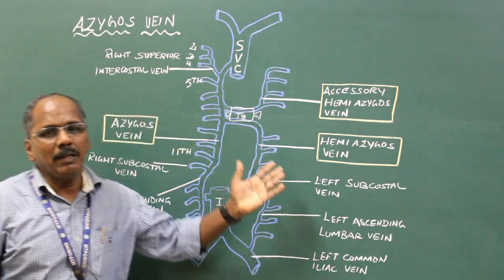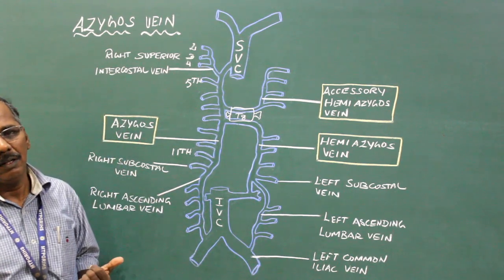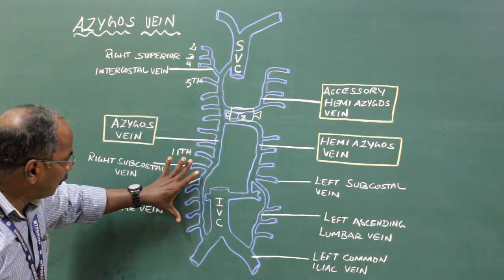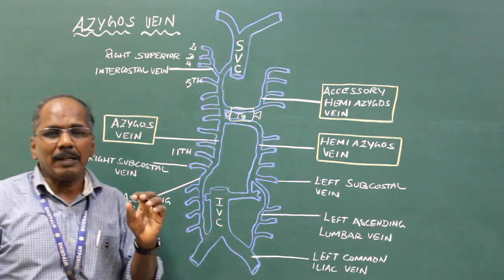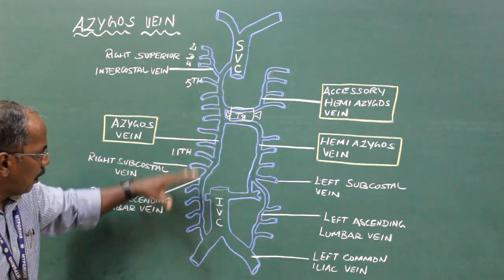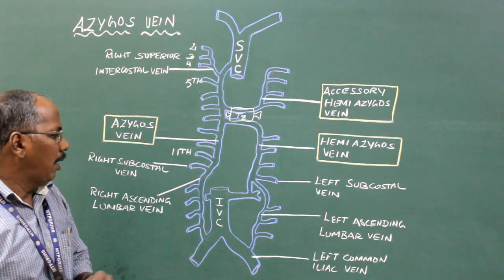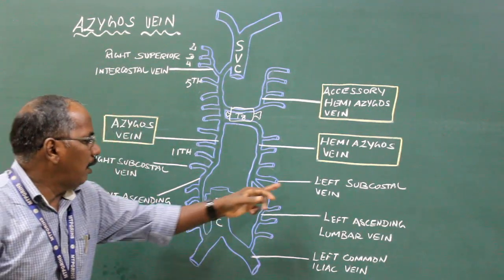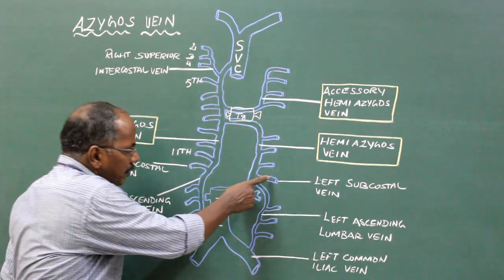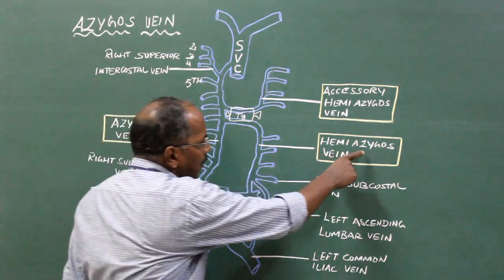Hemi-azygous vein. It is single and lies on the left side, and it corresponds to the lower half of the azygous vein — that is, it is the mirror image of the lower half of the azygous vein. Formation: it is formed by the union of the left subcostal vein and left ascending lumbar vein.